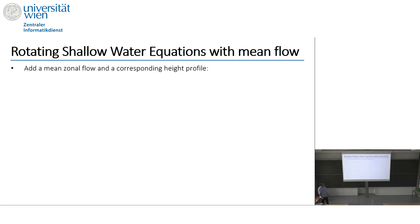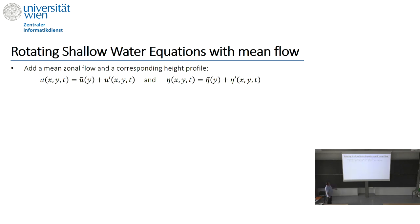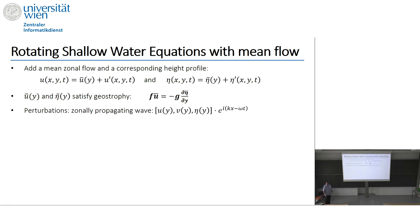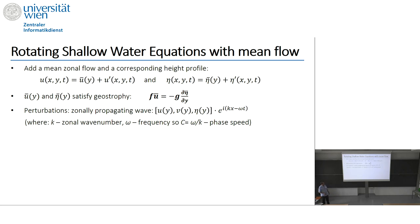When we add the zonal mean flow and the corresponding height profile, u is composed of u-bar, which can be a function of y, and the perturbation u-prime, and the height deviation is composed of eta-bar, a function of y, and the perturbation eta-prime. For zeroth order, u-bar and eta-bar must satisfy geostrophy. For the perturbation, we assume a zonally propagating wave with y-dependent amplitude multiplied by a sinusoidal function of k and t, where k is the zonal wavenumber and omega is the frequency, so the phase speed is omega over k.